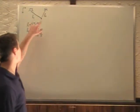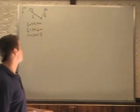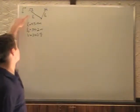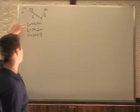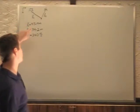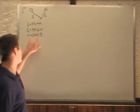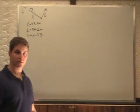In this problem we have two speakers that are vibrating in phase and they're distance L1 and L2 away from you. You're told that L1 is 45.4 meters, L2 is 34.2 meters, and the velocity of sound is 343 meters per second.